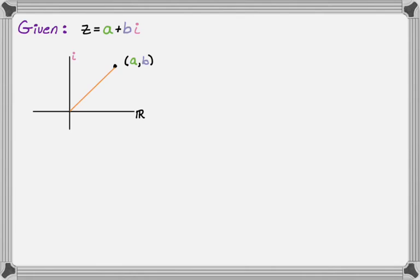And then from there we can find the distance to the origin, and we're going to call that r, like we do in a lot of contexts. And r is still going to be the square root of a squared plus b squared. So we're just using the distance formula.